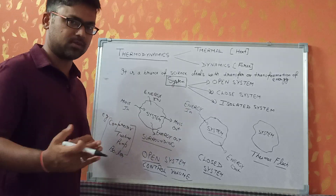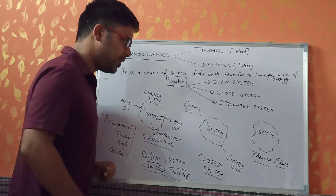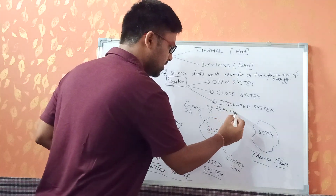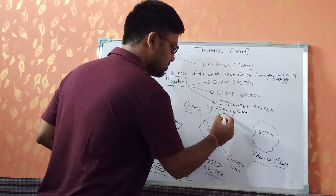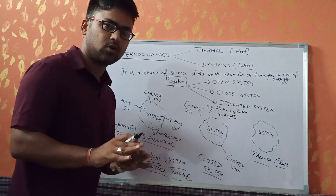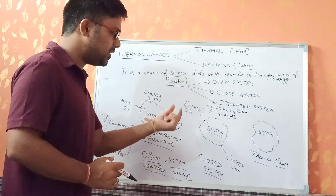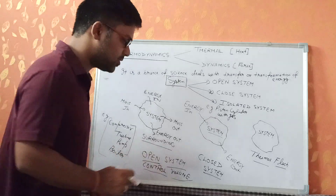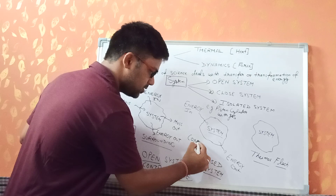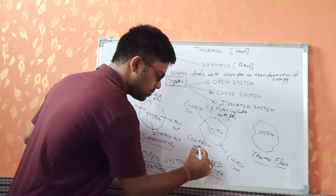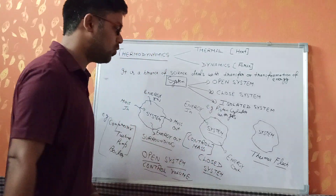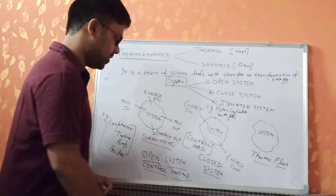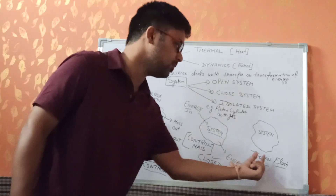Open system and control volume system are the same thing. For closed systems, the best example is the piston-cylinder arrangement. In a closed system, only energy can be exchanged between the system and the surrounding; mass cannot be exchanged, so mass remains constant. Just as open systems are called control volume systems, closed systems are called control mass systems. So we can call it a closed system or a control mass system.